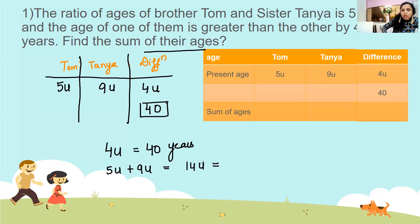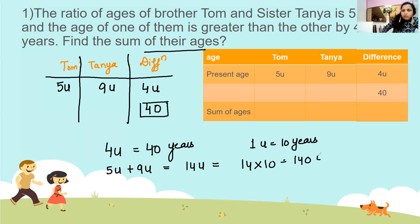So 1 unit is 40 divided by 4, which is 10 years. Therefore 14 units — that is Tom plus Tanya combined — will be 14 into 10 years, which is 140 years. That will be our answer.